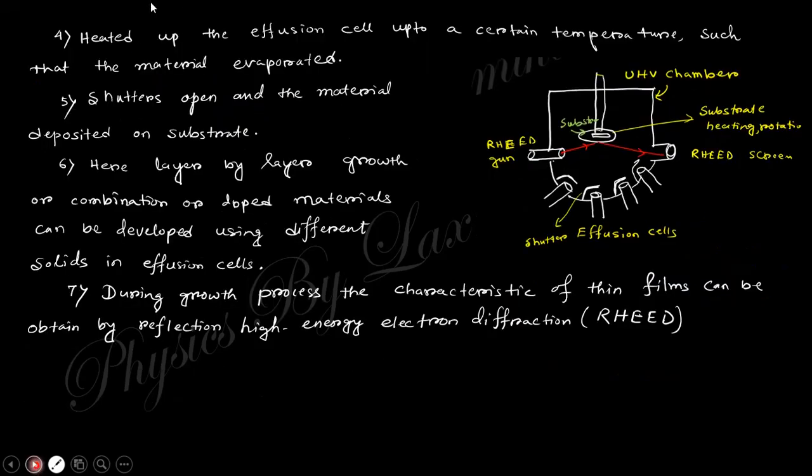Here another thing is RHEED. RHEED means Reflection High Energy Electron Diffraction. This is used for observing the characteristics of thin film during the growth process. When the thin film is growing, what characteristics or what mechanism is actually happening during the growth process can be observed from this RHEED method.